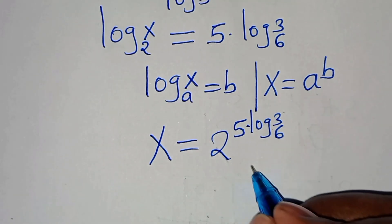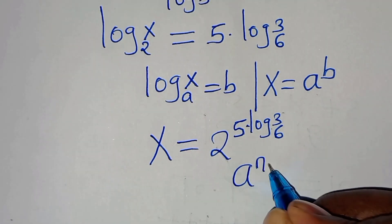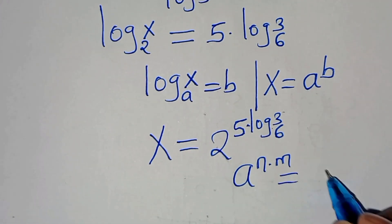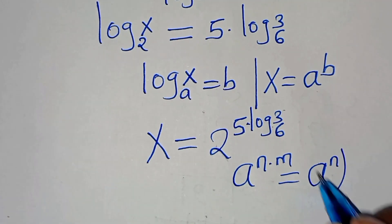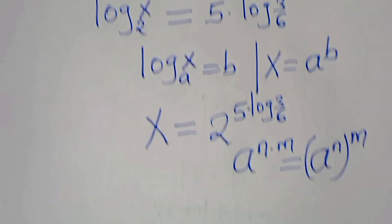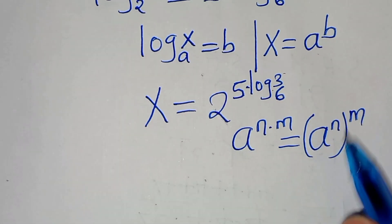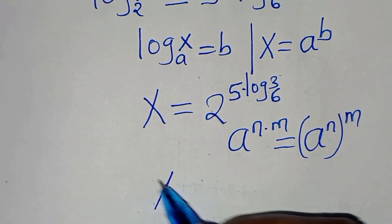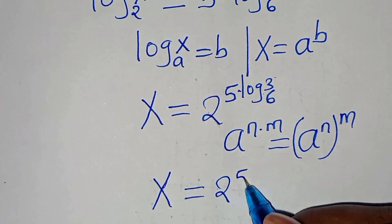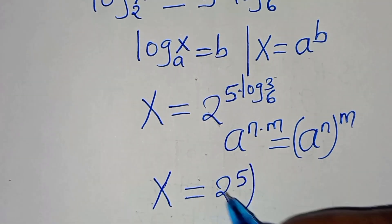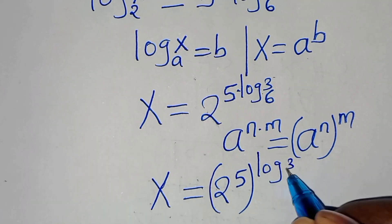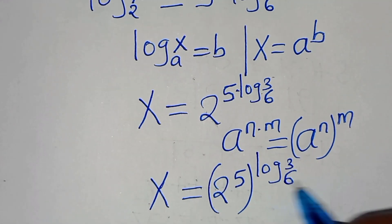We find that 2 to the power of (5 · log base 6 of 3) is in the form of a to the power of n times m, which we can express as (a to the power of n) raised to the power of m. Applying this exponent property, x equals (2 to the power of 5) raised to the power of log base 6 of 3.